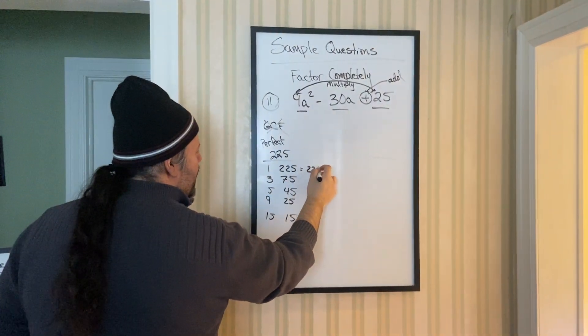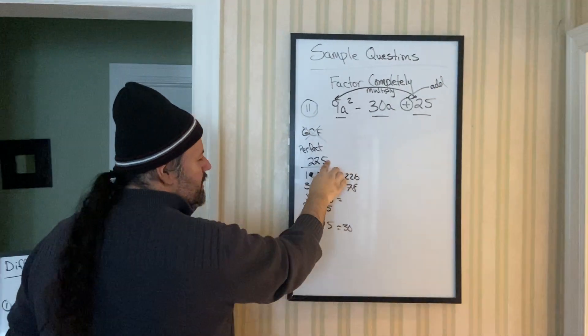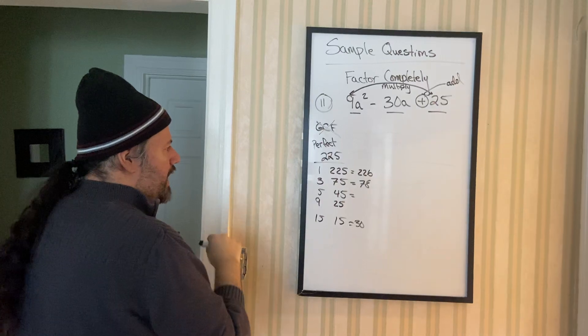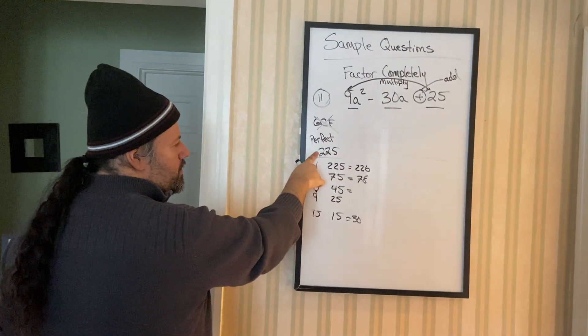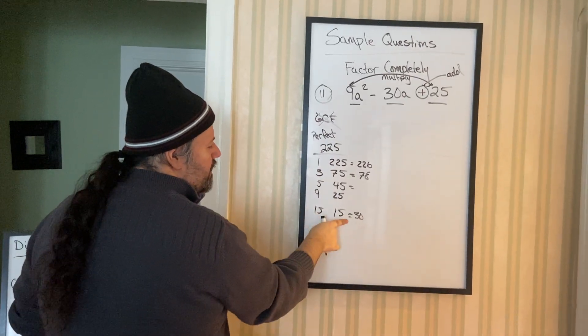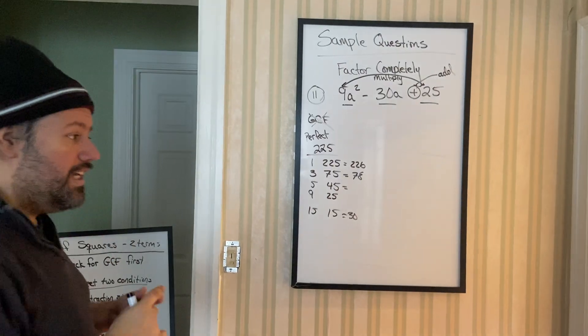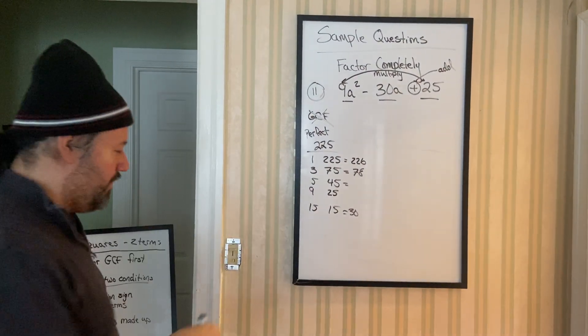But anytime that you get a very large number, I suggest see if you can get the square root of it. On your calculator, you have a square root button. You'll hit the square root button, then put in 225, and then hit equals. And if you get 15, you know that 15 times 15 works. If you get a decimal point, then it's not a perfect square.